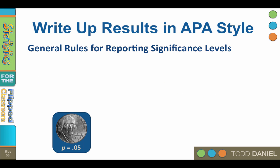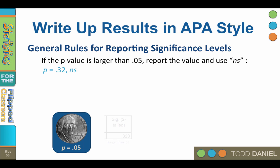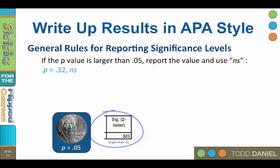Here are the general rules for reporting probability statistics. Look at the value in the SIG box. This is a probability value, also known as a p-value. It represents the probability of finding the results of your test if the null hypothesis is true.